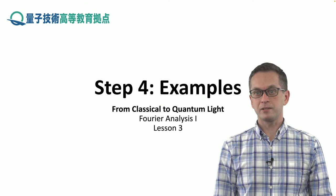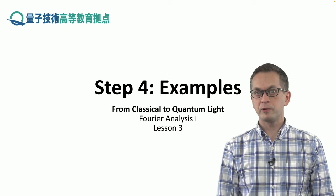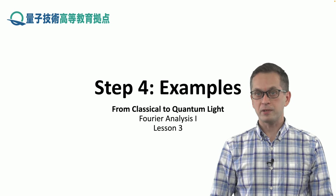Step 4: Examples. Now that we know how to write down a Fourier series for a 2π periodic function, let's apply it to some examples.